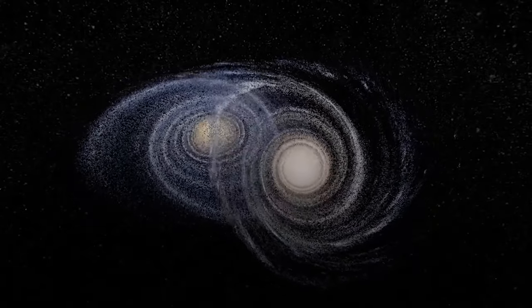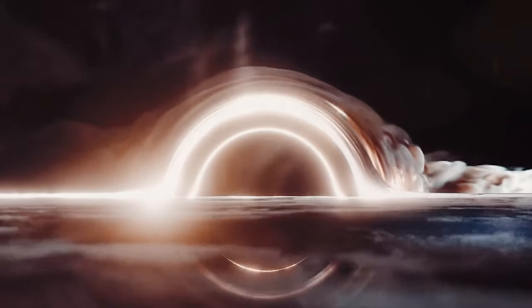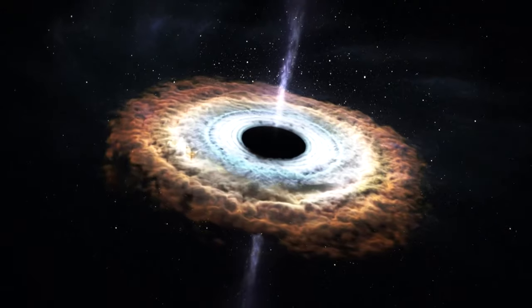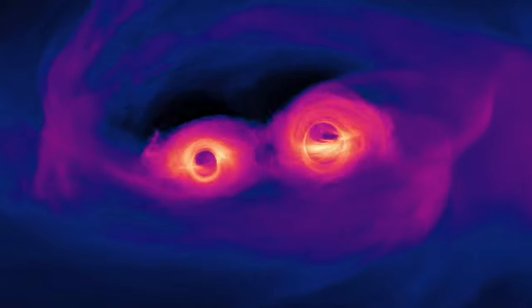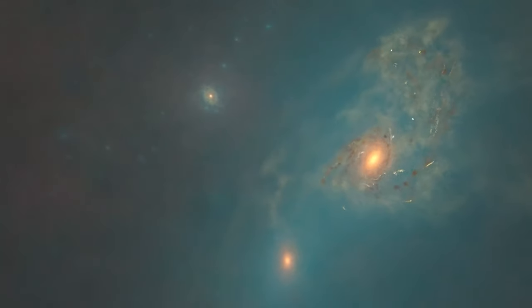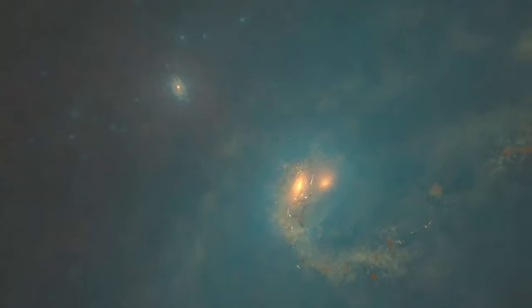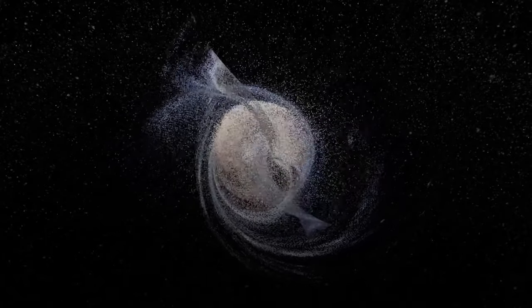During a galaxy merger, the central supermassive black holes of each galaxy also begin to interact. As the black holes orbit around each other, they emit powerful gravitational waves that cause them to spiral inward until they eventually merge into one.